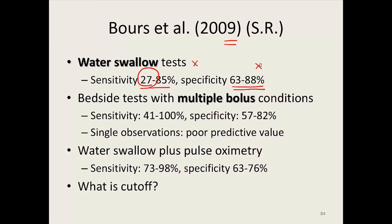This systematic review also found that bedside tests using multiple bolus conditions — not just water swallow — had a really wide range of sensitivity and specificity, making them somewhat difficult to interpret. This means we may or may not have good predictive properties using multiple bolus conditions. Notably, a single observation — meaning one swallow, or a very small set — had very poor predictive value.